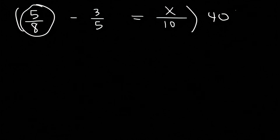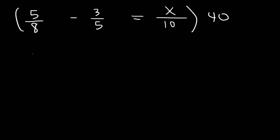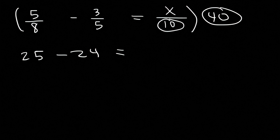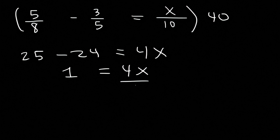What's 5 over 8 times 40? You can do 5 times 40 which is 200 and then divide by 8, or you can do 40 divided by 8 which is 5, times the 5 on top, and that's 25. Now 3 fifths of 40: 40 divided by 5 is 8, and 8 times 3 is 24. For the last one, 40 divided by 10 is 4, times x, that's 4x. So 25 minus 24 is 1, and x is equal to 1 fourth.